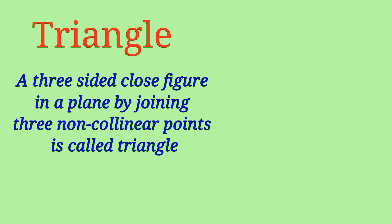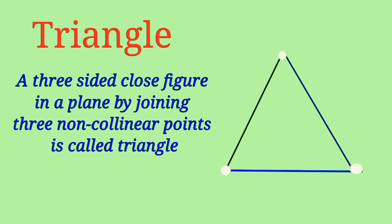The next definition is triangle. A triangle is a three-sided closed figure in a plane formed by joining three non-collinear points, which is called a triangle.